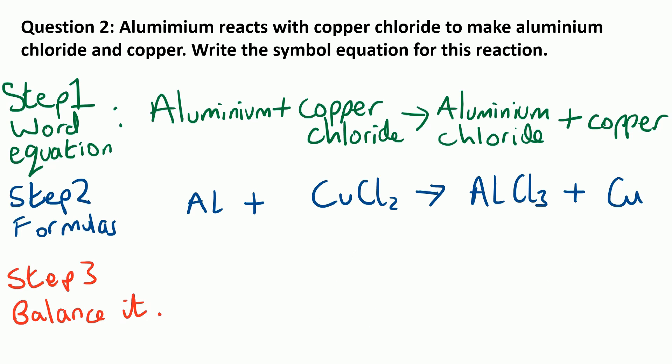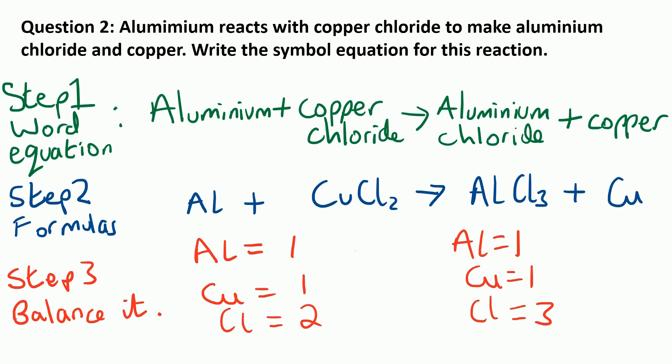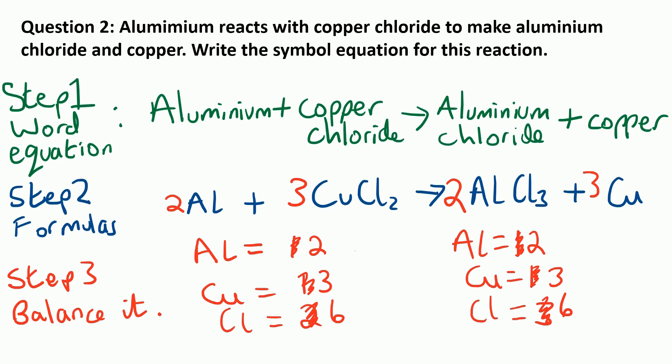We then need to balance it. At the moment we've got one aluminium on each side, one copper on each side, two Cl's on the left and three on the right. Where we've got a two and a three, the easiest way is to make them up to six on each side. So we multiply CuCl₂ by three to give six chlorines — but that's now given us three coppers. We need six chlorines on the right, so we times AlCl₃ by two, giving six chlorines but changing aluminium to two. Then we sort out the copper: three on the left, so we put three on the right. And we put a big two in front of aluminium. Final check: two aluminiums on each side, three coppers on each side, six chlorines on each side. That one is now balanced.